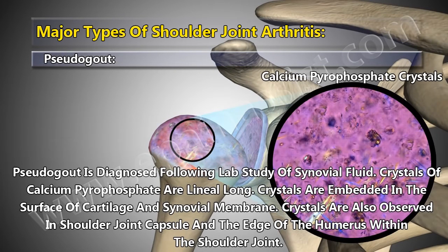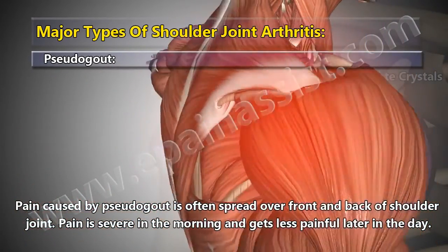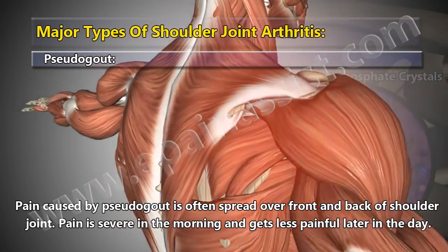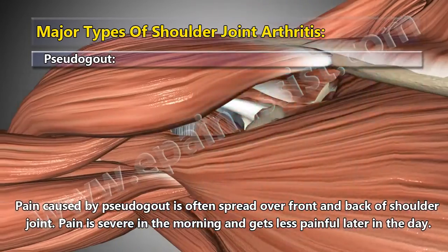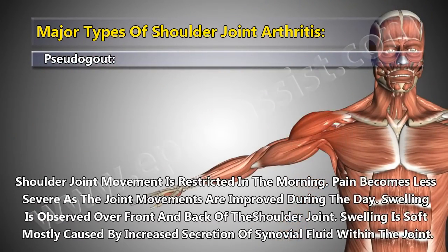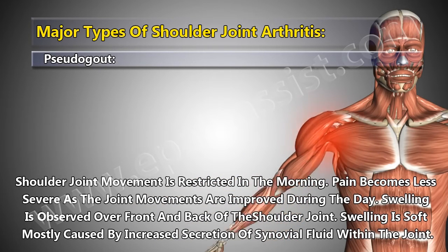Crystals of calcium pyrophosphate are linear and long, embedded in the surface of the cartilage and synovial membrane, and also observed in the shoulder joint capsule and the edge of the humerus. Pain is often spread over the front and back of the shoulder joint, is severe in the morning, and gets less painful later in the day. Shoulder joint movement is restricted in the morning and improves during the day. Swelling is soft, mostly caused by increased secretion of synovial fluid within the joint.